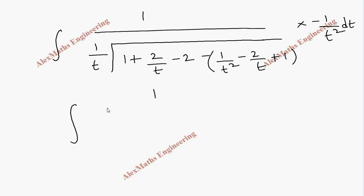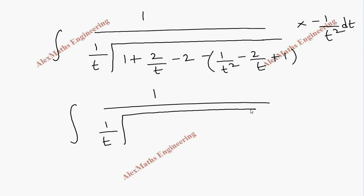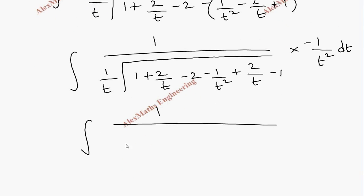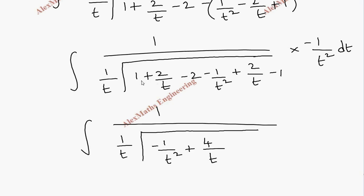In the next step, keeping 1/t outside, we take the minus sign inside the square root: the expression becomes √(−1/t² + 2/t − 1 + 2/t), and outside we have −(1/t²)dt. Grouping like terms: the two 2/t terms combine to give 4/t, and the +1 and −1 cancel, leaving √(−1/t² + 4/t) times −(1/t²)dt.